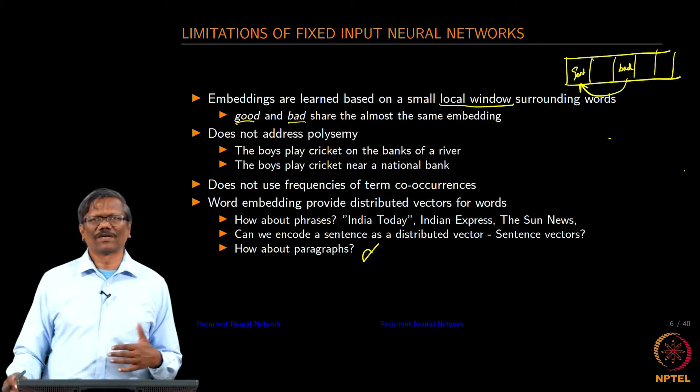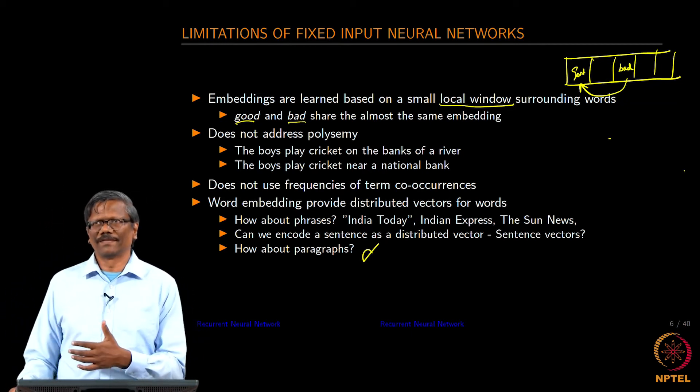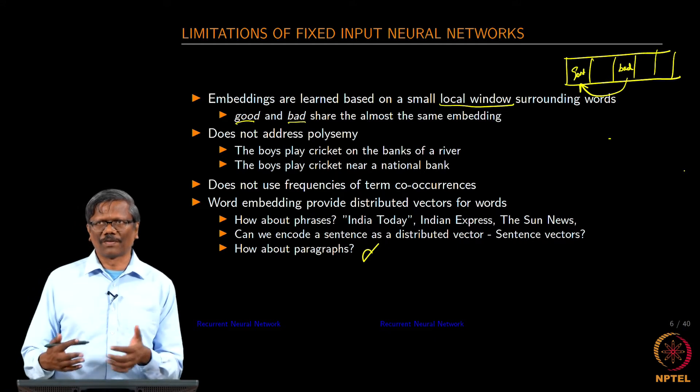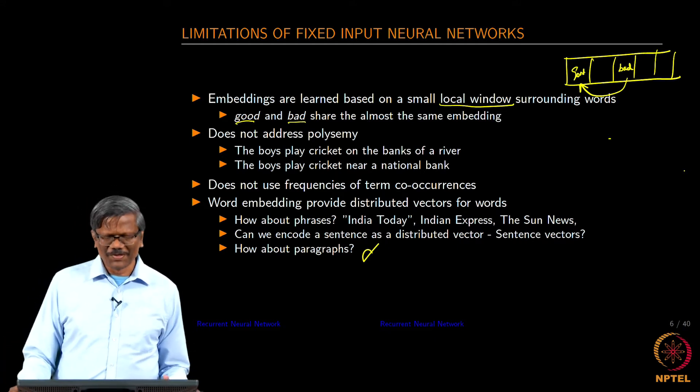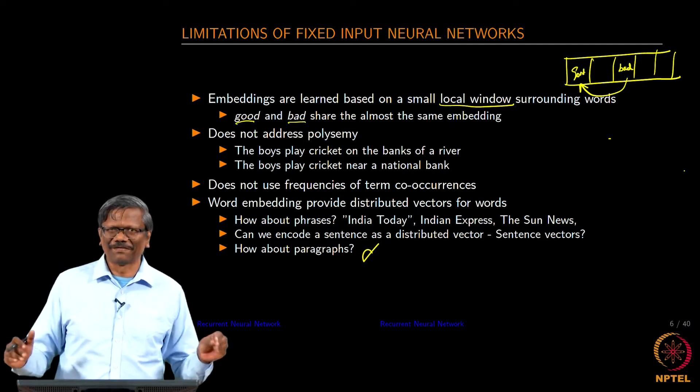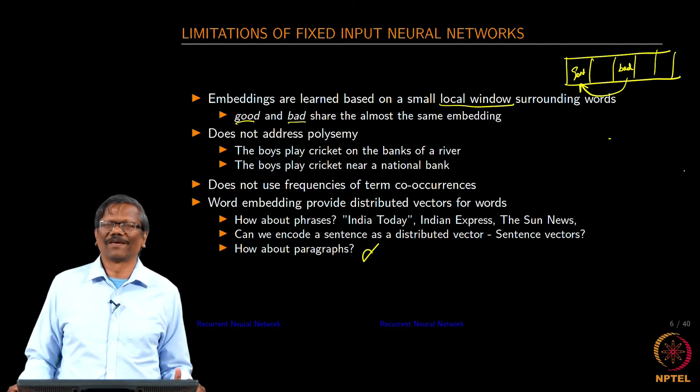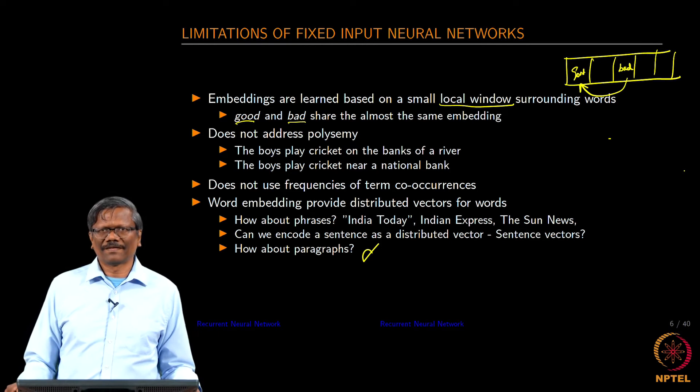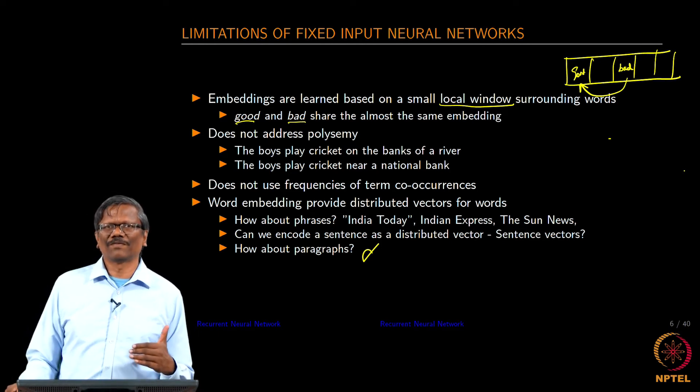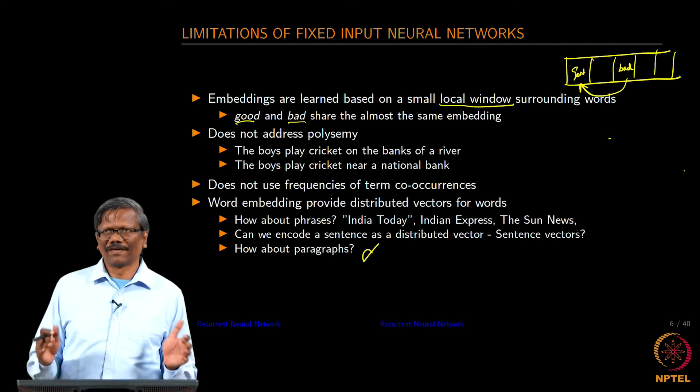We are going to be having this as the context for us. That means the embedding is not learned properly. There is a possibility - it is not the problem with the network, it is the problem with the way we have constructed the sentence. We probably should construct the sentence very carefully so that these kinds of opposite words do not occur together. Is it possible? I think in a natural language it is not possible. We have to accept that the network would not be able to really do a good job if these words occur very close to each other.